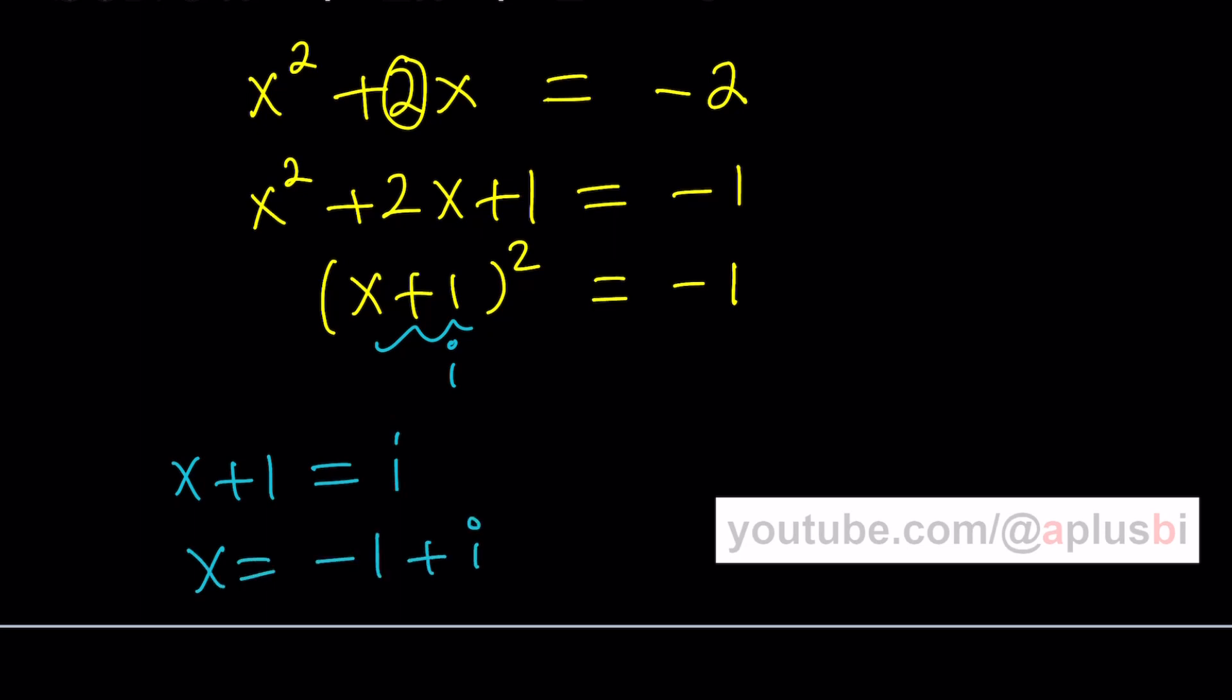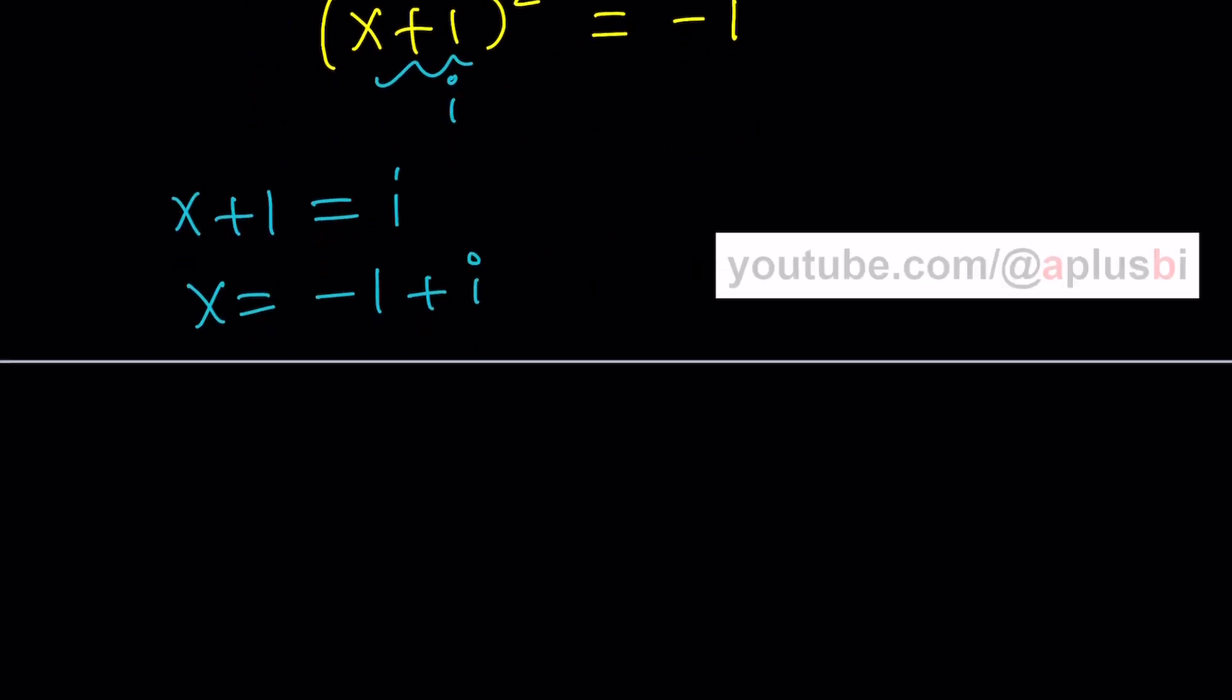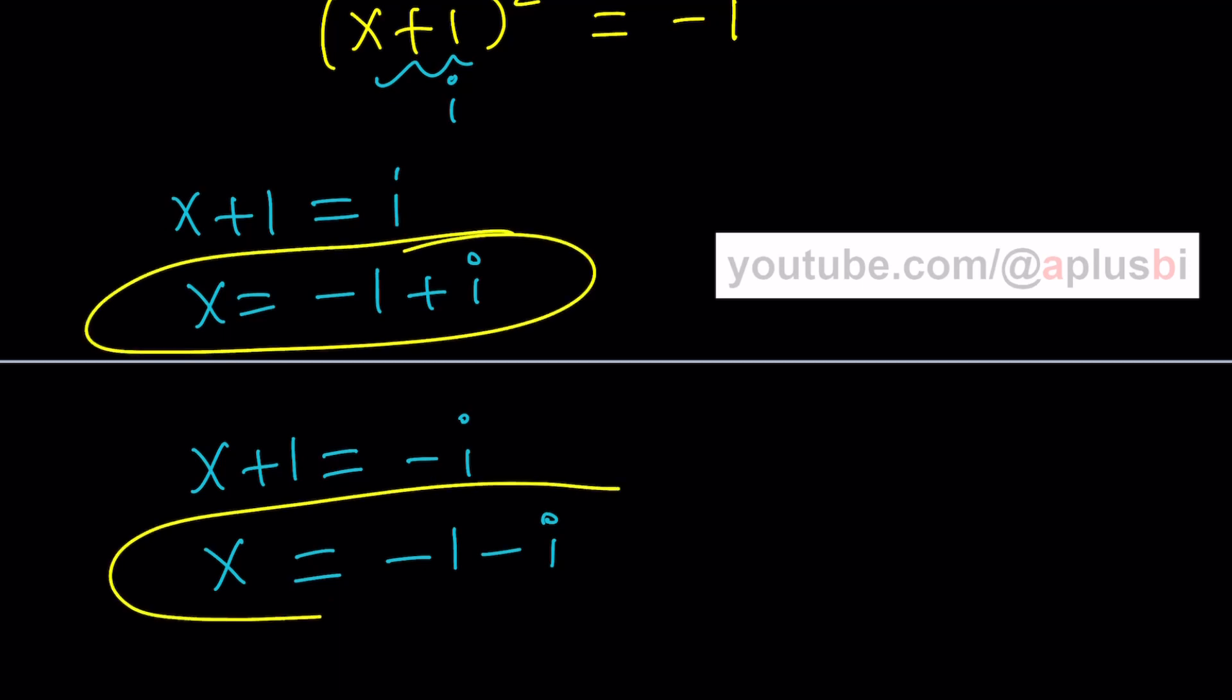But i is not the only number whose square equals negative 1. Of course by definition that's what it is. But if you square negative i, you also get i squared, right? Because it's negative i times negative i. So we can also set x plus 1 equal to negative i. And this gives us x equals negative 1 minus i. So you don't really know much about i maybe at this point, but you do know the solutions look like this. So this is how we can basically work with complex numbers. And that is the channel A plus B I.